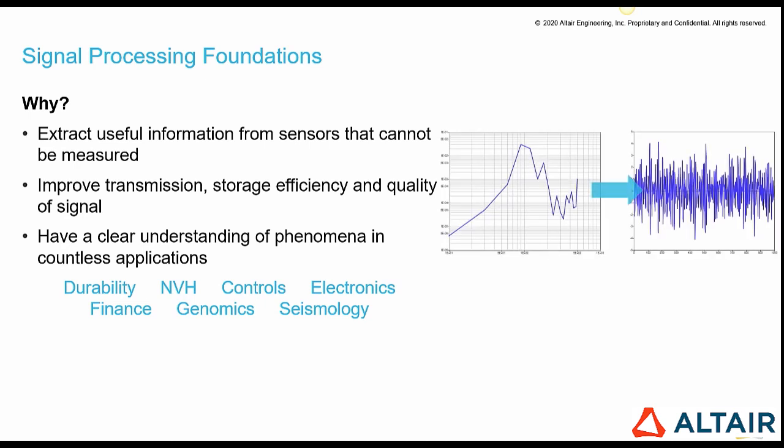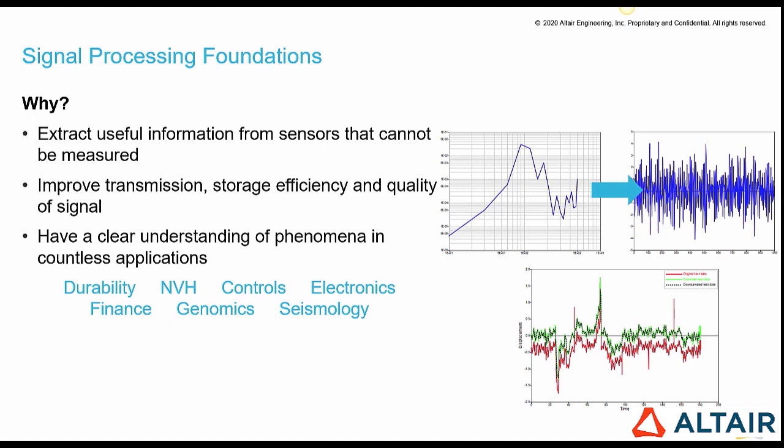A demonstration of where to use signal processing in durability analysis, for example, is to convert a power spectral density signal into a time history. Or in NVH, to clean up a displacement signal acquired with accelerometers to detrend, remove spikes, and resample the data.